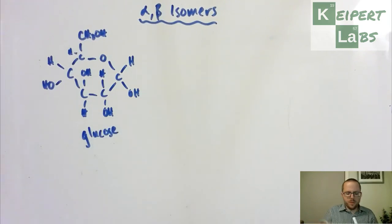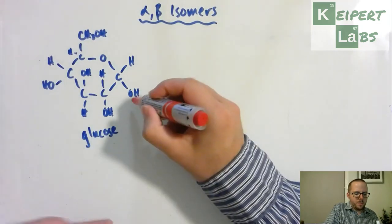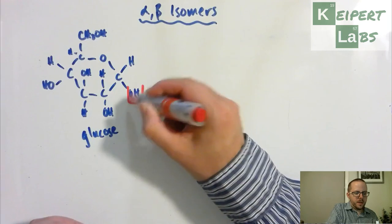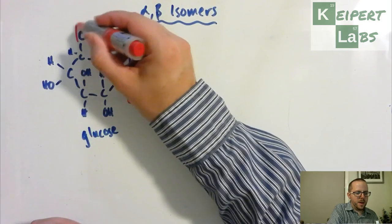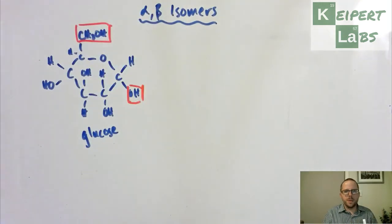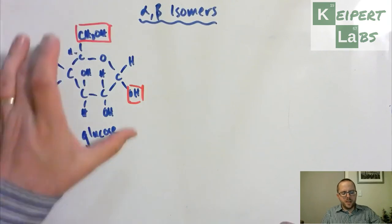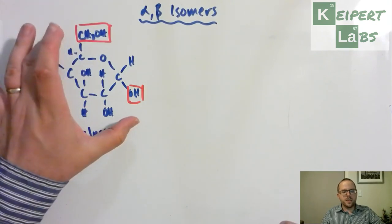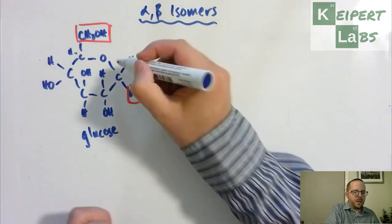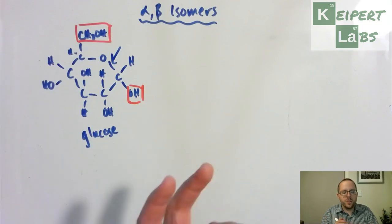What I want you to do here is pay attention to two parts: this bit and this bit, these two groups that I've labeled in red. Because what happens is that we know that this structure at this point here can reopen. The covalent bonds can undo so that we end up with an open chain version.